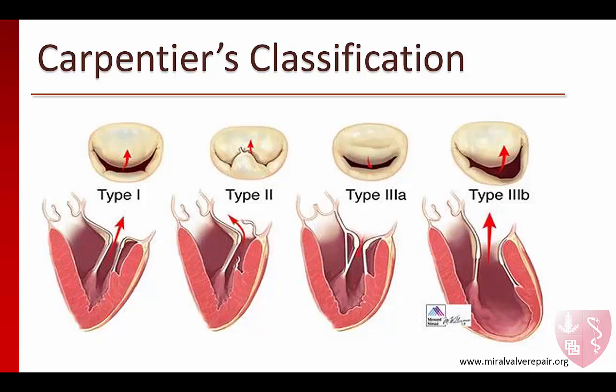Type 3 disease is characterized by restricted leaflet motion and is subdivided into types 3A and 3B. 3A describes structural damage to the valve, typically by rheumatic disease, and involves restricted movement in both systole and diastole. 3B involves restriction in systole only and is seen in functional or ischemic MR. The regurgitant jet could either be central, as in type 3B, or directed towards the disease leaflet, as in type 3A that only involves a single leaflet.